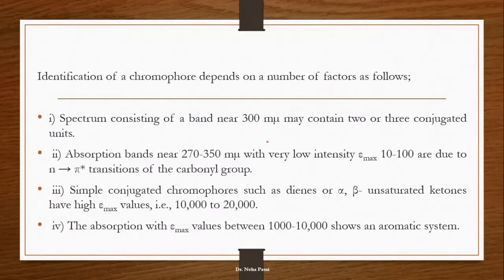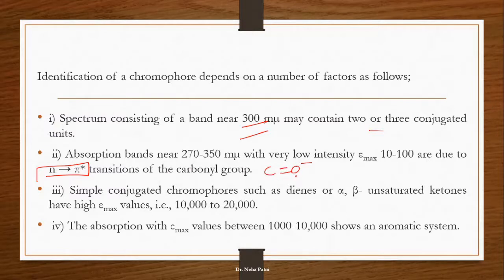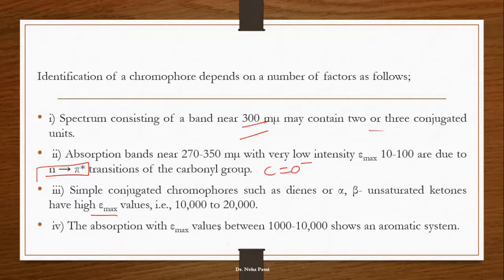Identification of a chromophore from the UV spectrum is straightforward. A band near 200 nm could be due to 2-3 conjugated units. A band with very low intensity is likely n→pi* from a carbonyl group. Simple conjugated chromophores like dienes or alpha-beta unsaturated ketones show very high intense absorption around 215–250 nm. If the epsilon values fall in the range of 250–300 nm with fine structure, it is likely an aromatic system.